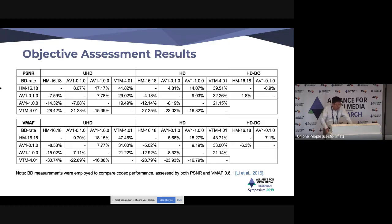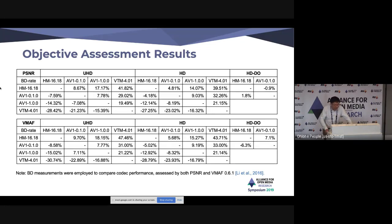For HD content, savings are slightly lower when using PSNR as a quality metric. When using VMAF, the ranking remains the same but absolute savings are slightly higher than with PSNR. For the HDDO resolution group, if we use PSNR, HM and AV1 perform almost the same. But if we use VMAF, AV1 can save 6.2% BD rate against HM.